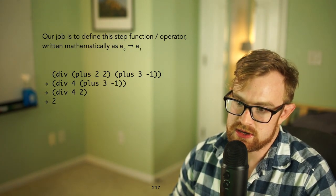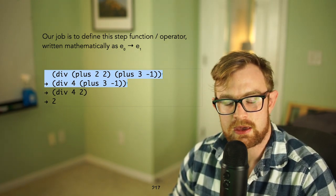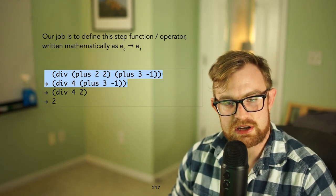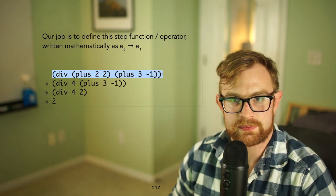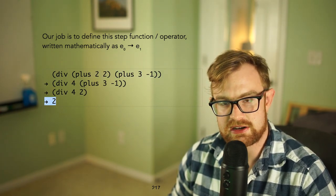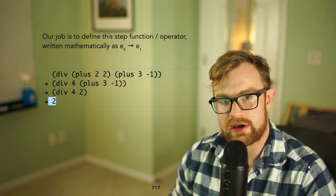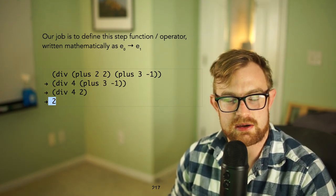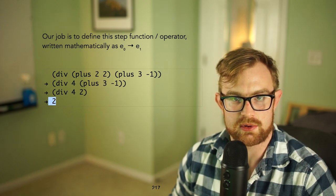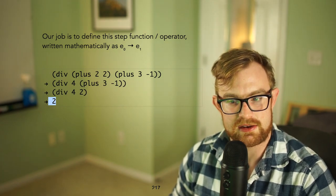To define a small step semantics we need to define this step operator that tells us how to step from one state to the next. In our current setting it suffices to have states just be expressions, and this steps-to relation (right arrow) tells us how to go from one state to the next. We execute this right arrow until we finally get to a value, which can't step to anything because values are the irreducible parts of the language. In this setting it works out nicely since there are no lambdas; when we add lambdas it gets more confusing, but it's nice to see these concepts without those complications first.